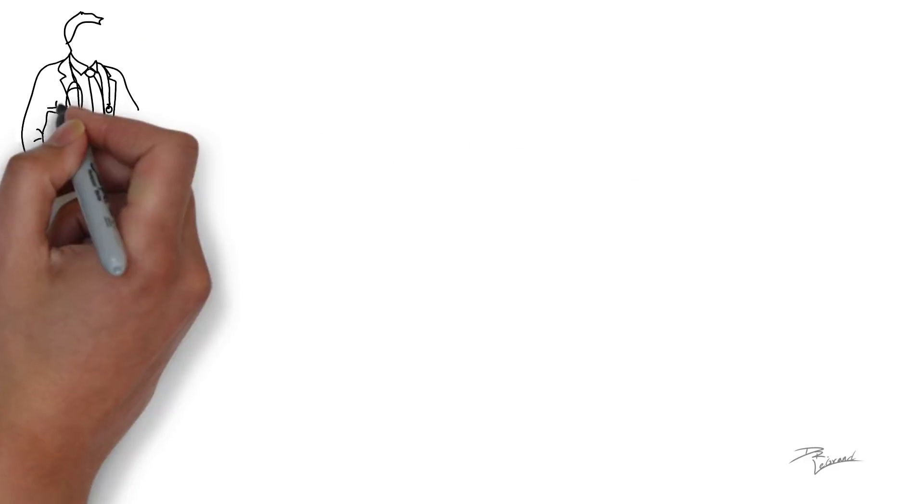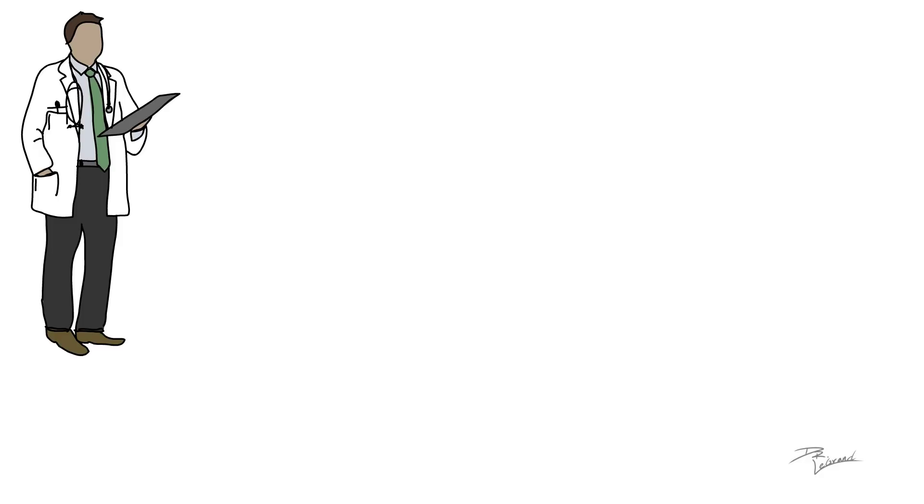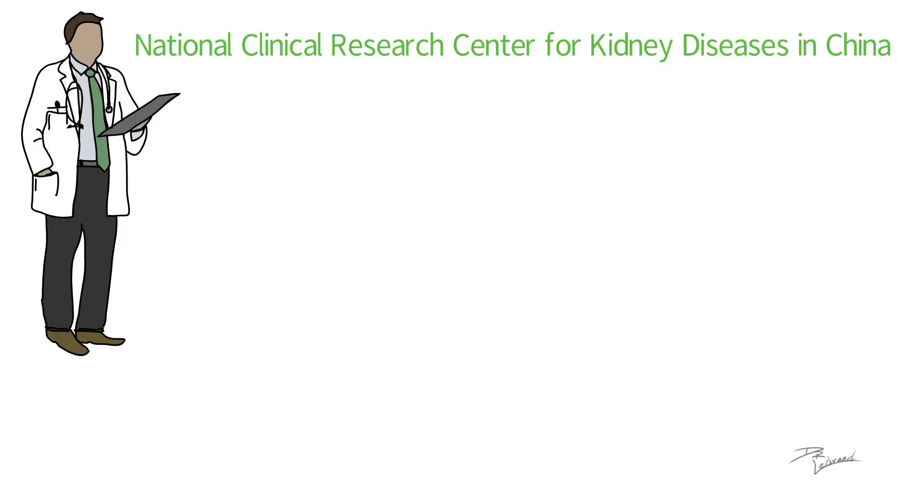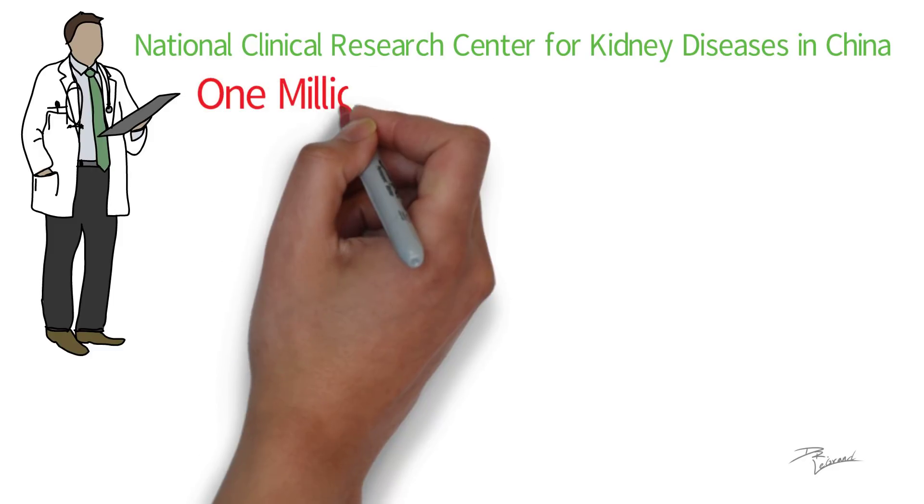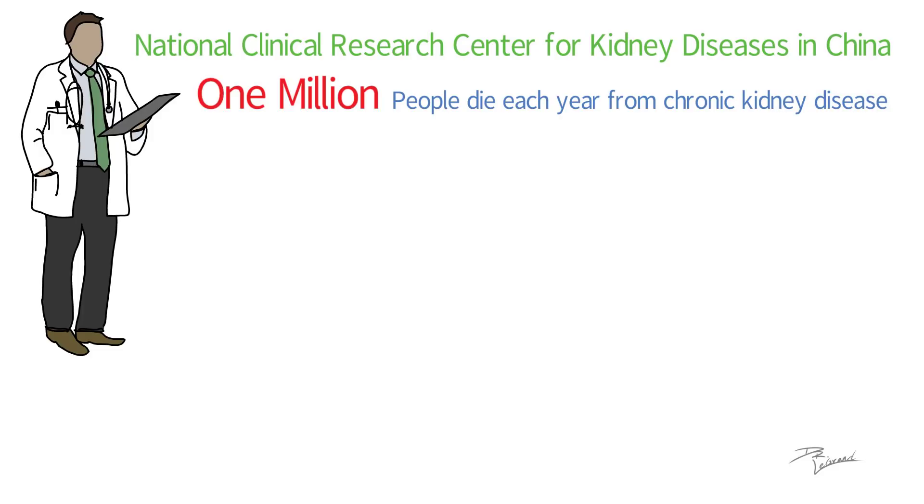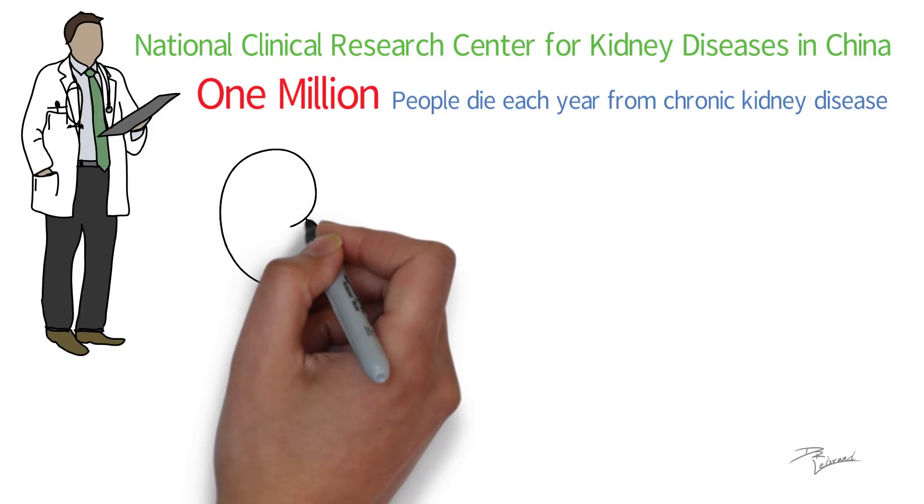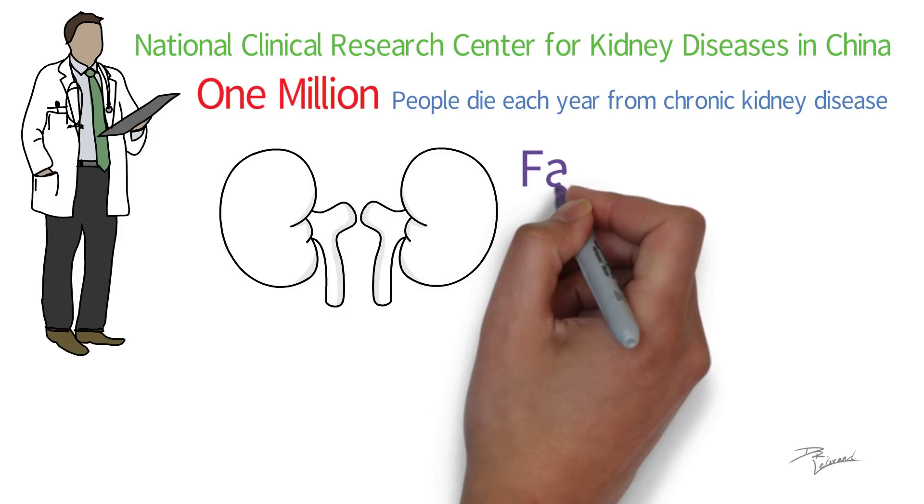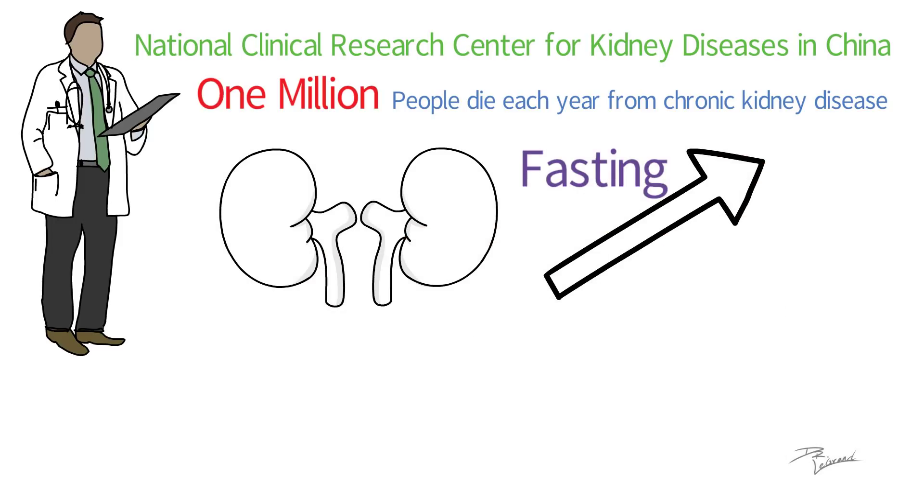A study that was led by a scientist at the National Clinical Research Center for Kidney Diseases in China explains that almost 1 million people die each year from chronic kidney disease. They go on to explain that a new study was initiated in order to determine the effects that fasting may have on kidney diseases and to address any safety concerns.